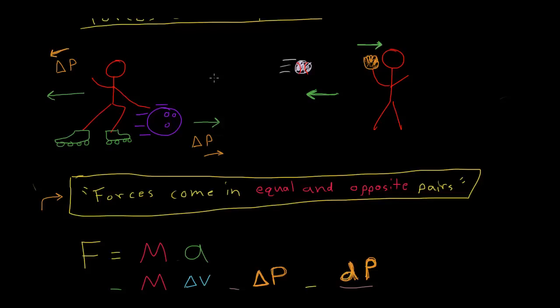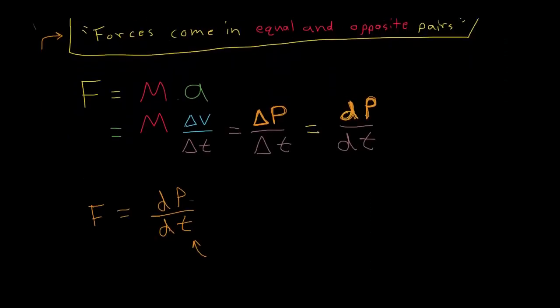So now if we think about the total momentum of me and the ball, so even though the ball gained some momentum, I gained the same amount of momentum in the opposite direction. So that when we add up all the momentum before and after, it should always be the same. And everything.